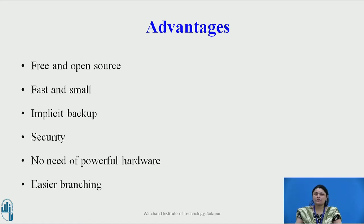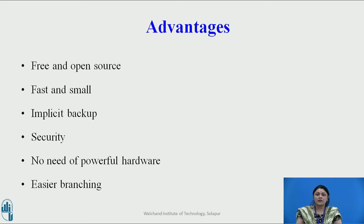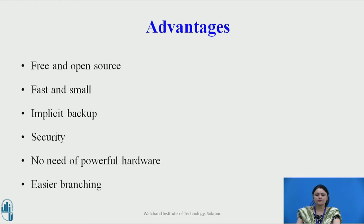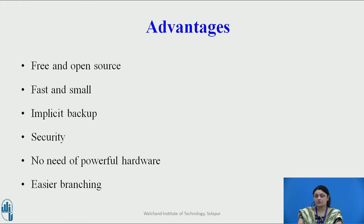Now let us look at the advantages of Git. First, it is free and open source — released under the GPL (General Public License) and freely available over the internet. You can use Git to manage proprietary projects without paying a single penny, and you can download and modify its source code. Second, it is fast and small — most operations are performed locally, giving huge speed benefits. Git does not rely on a central server, so there is no need to interact with a remote server for every operation. Although Git mirrors the entire repository, the size of data on the client side remains small. Third, implicit backup — the chances of losing data are very rare when there are multiple copies; data on any client side mirrors the repository.